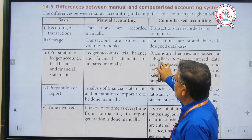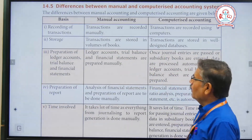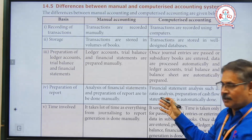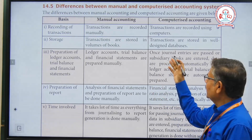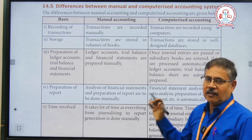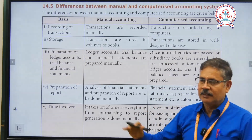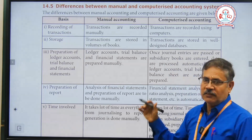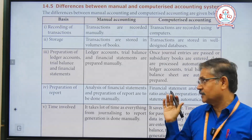The first point is the record of transaction. Record of transaction means: in the manual system, transactions are recorded manually, but in the computerized system, they are recorded using computers.